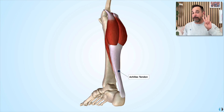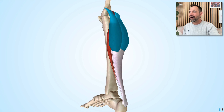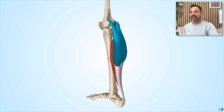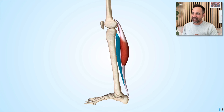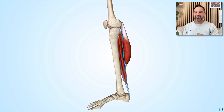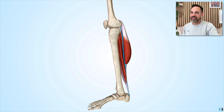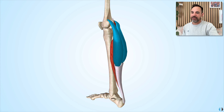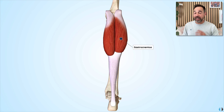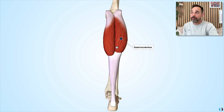There are three main muscles which are suggested to insert into the Achilles tendon. They are the gastrocnemius muscle, the soleus muscle, and it's suggested that the plantaris muscle also inserts a little bit into the Achilles tendon. But the ones that are probably most relevant are the gastrocnemius and the soleus. The gastrocnemius has two heads — a medial head and a lateral head — and we can see how both of these heads insert into the Achilles tendon.